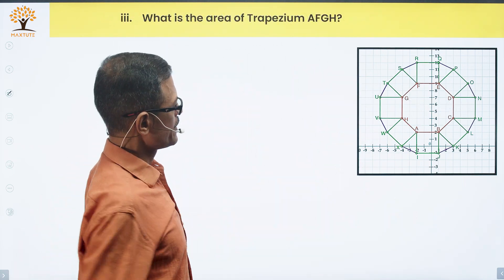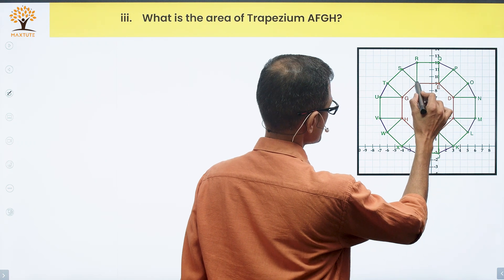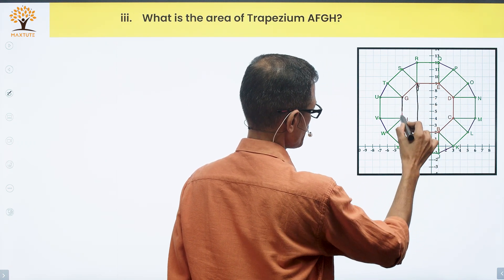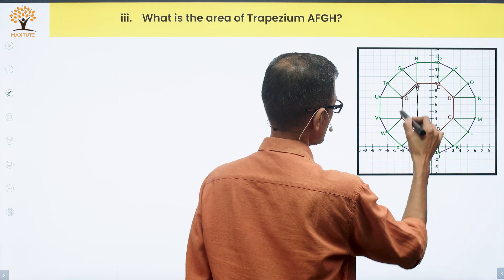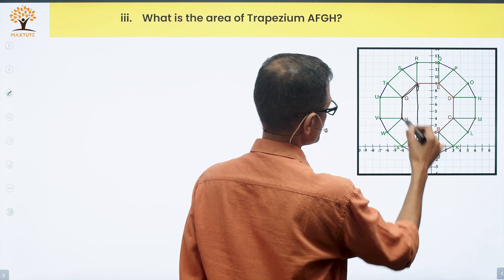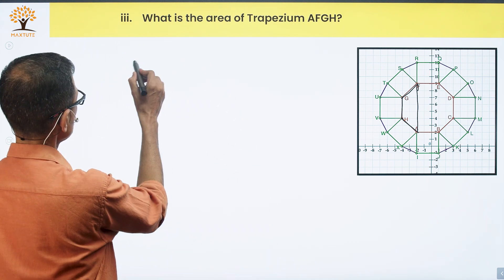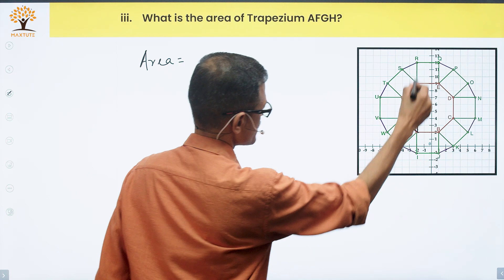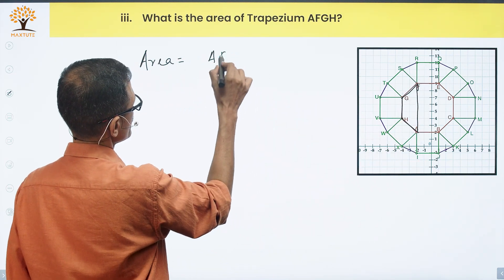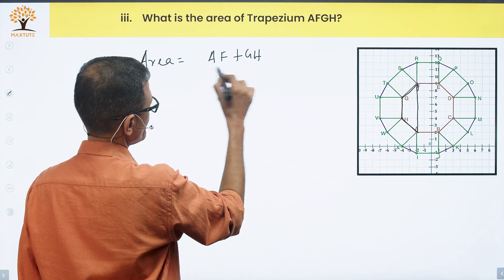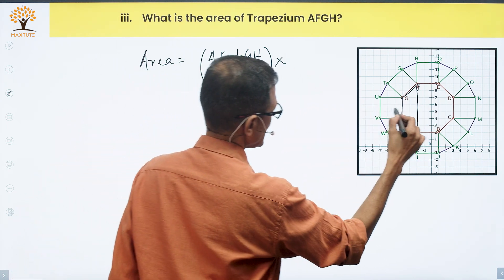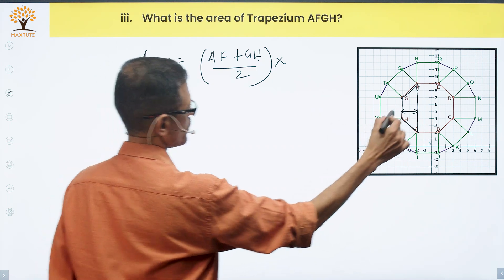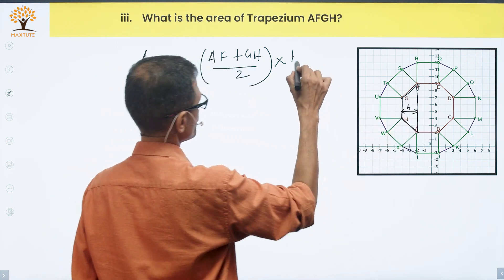What is the area of trapezium AFGH? This is AFGH - they are parallel, the non-parallel sides. The area of this trapezium is sum of the parallel sides, which is AF plus GH divided by 2 into the height. Height is the perpendicular distance between the two parallel sides. We'll call it lowercase h.